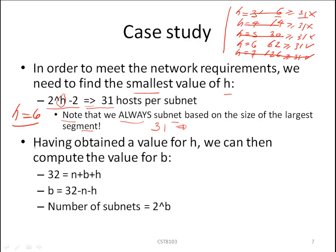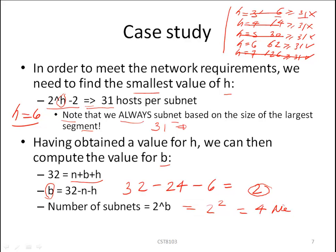Now that h equals 6, we can compute b. We know 32 equals n plus b plus h, so b equals 32 minus n (which is 24) minus h (which is 6), giving b equals 2. We are therefore transforming 2 host bits into network bits, leaving us with 2 to the 2 equals 4 networks. By borrowing 2 bits, we have subnetted our base address into 4 subnets, with h equals 6 and b equals 2.